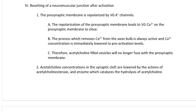As important as understanding how a muscle contracts is understanding how the system is deactivated. After each action potential arrives at the presynaptic membrane, the system must reset back to basal levels to be ready for the next action potential — otherwise the muscle will stay in the contracted position. Resetting of the neuromuscular junction after activation: the presynaptic membrane is repolarized by voltage-gated potassium channels, the same ones normally involved in an action potential.